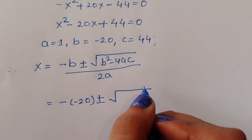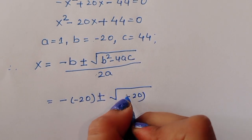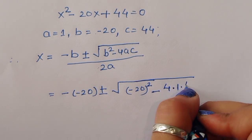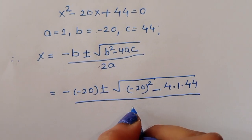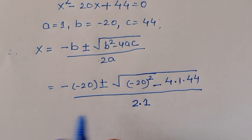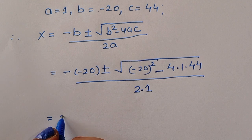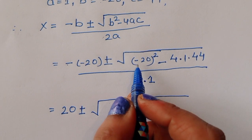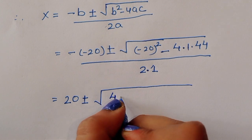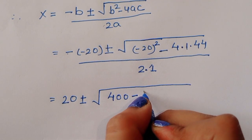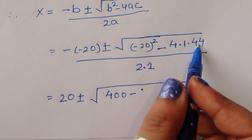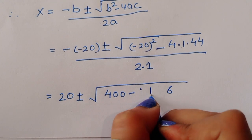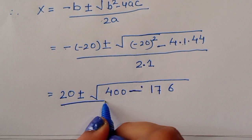Substituting: minus b is minus of minus 20, which becomes plus 20, plus or minus the square root of (minus 20) squared minus 4 times 1 times 44, divided by 2 times 1. That gives 20 plus or minus the square root of 400 minus 176, divided by 2, which is 20 plus or minus the square root of 224, divided by 2.